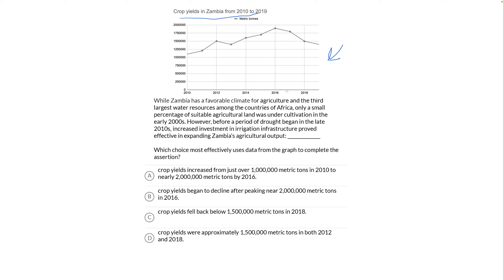It's crop yields in Zambia in the 2010s — metric tons of crops on the left, year along the bottom. While Zambia has a favorable climate for agriculture and the third largest water resources among the countries of Africa, only a small percentage of suitable agricultural land was under cultivation in the early 2000s. However, before a period of drought began in the late 2010s, increased investment in irrigation infrastructure proved effective in expanding Zambia's agricultural output — blank. Which choice most effectively uses data from the graph to complete the assertion?